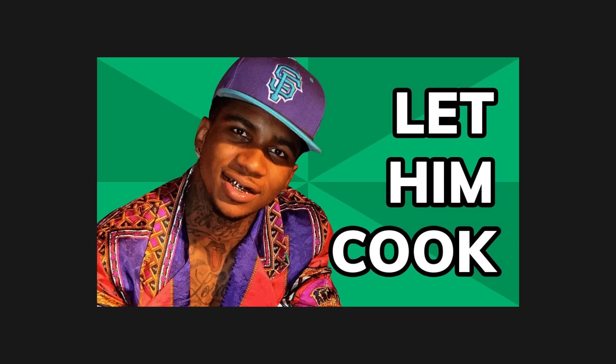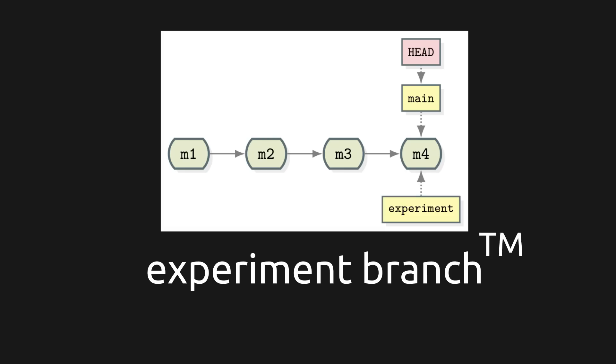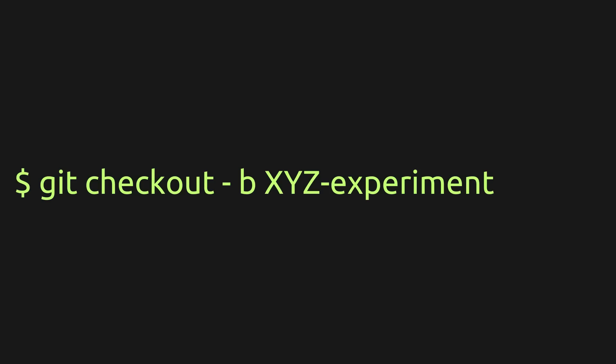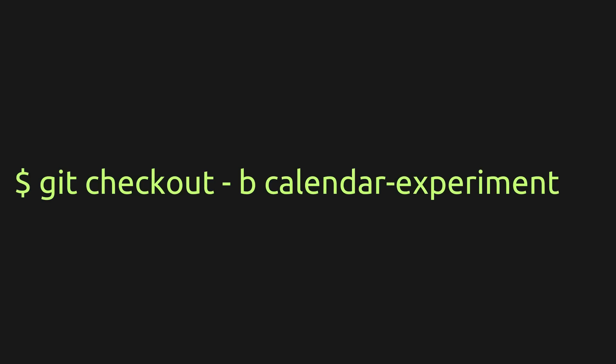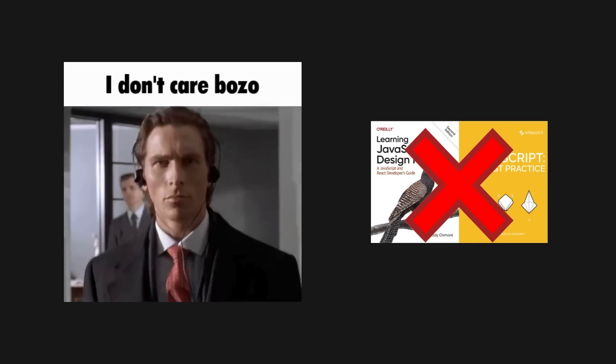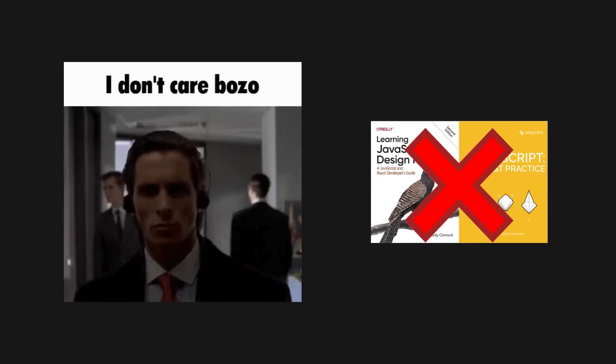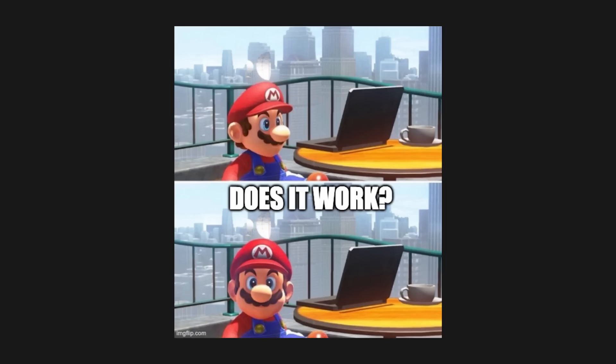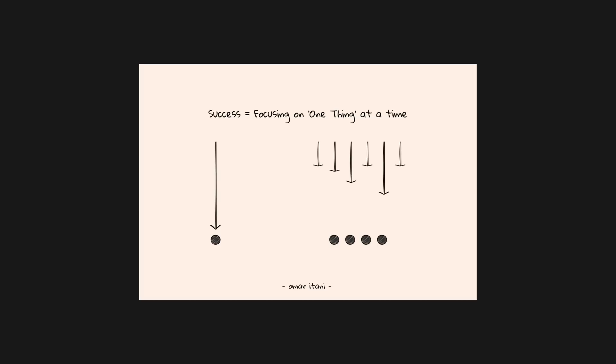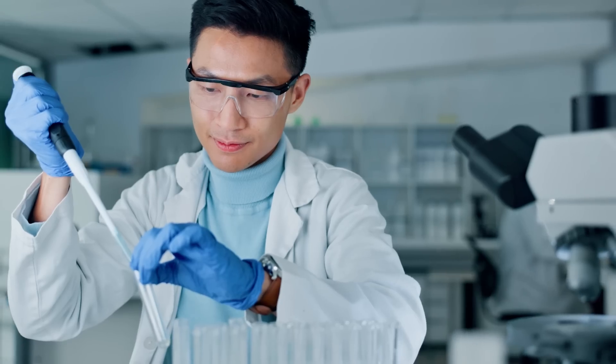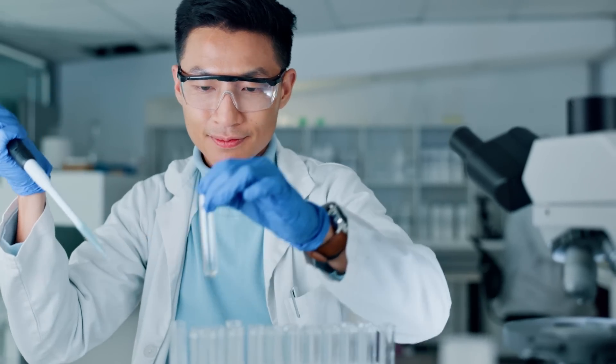So I developed something I call the experiment branch. Whenever I'm writing code, I start with an experiment branch. So if I'm making a calendar, I'll call it 'calendar experiment.' In this branch, I don't care about best practices, best conventions, or design patterns. All I care about is: does it work? Until it does, I'm just going to keep doing what I'm doing. I don't care if it's inefficient, poorly written, or embarrassing. My single goal is to get it to work — because remember, it's just an experiment.